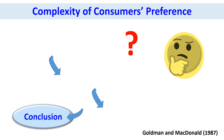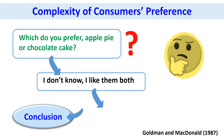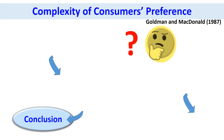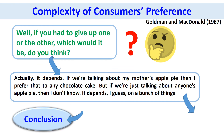Now I am explaining the complexity of the emotional components with a few examples. If you ask someone which they prefer — apple pie or chocolate cake — they could answer: 'I don't know, I like them both.' It is true that we don't like only one food, so many factors are involved in the selection. If we have to give up one or the other, the answer might be: 'Actually, it depends. If we are talking about my mother's apple pie then I prefer that to any chocolate cake. But if we are talking about anyone's apple pie, I don't know — it depends on a bunch of things.'